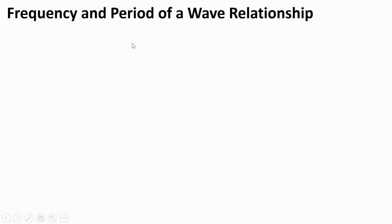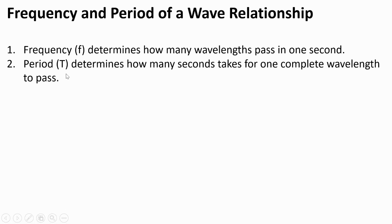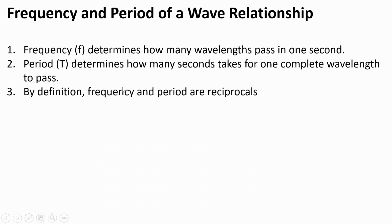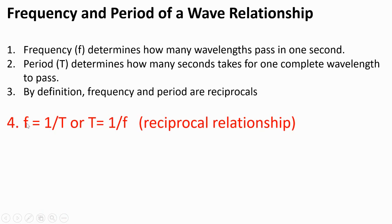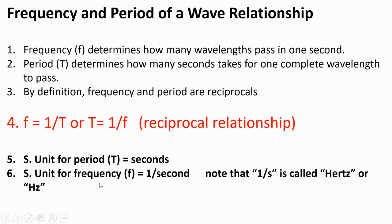Frequency and period of a wave relationship. Frequency, or lowercase f, determines how many wavelengths pass in one second. Period, or uppercase T, determines how many seconds it takes for one complete wavelength to pass. So by definition, frequency and period are reciprocals. Mathematically, frequency is equal to the inverse of period, or period is equal to the inverse of frequency. The SI unit for period is seconds, and the SI unit for frequency is one over second — which is also called hertz, or Hz.